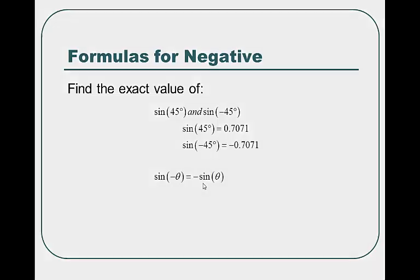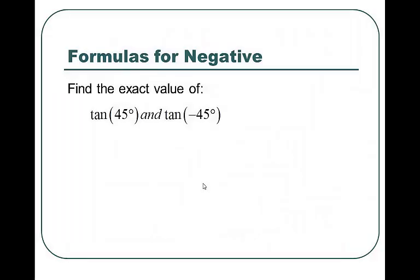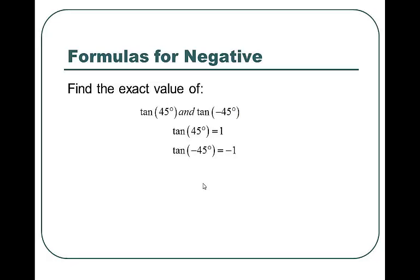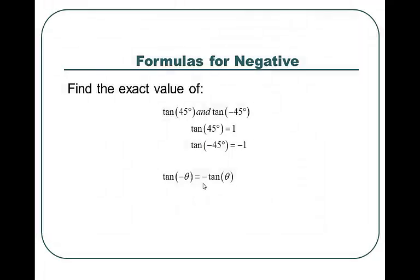Let's show tangent. Find the exact value of tangent 45 and tangent of negative 45 degrees. You'll notice that they are 1 and negative 1. So tangent and sine have a lot in common, and cosine is kind of the odd man out. The tangent of negative theta is equal to negative tangent of theta. This also applies for cotangent, cosecant, and secant as well.